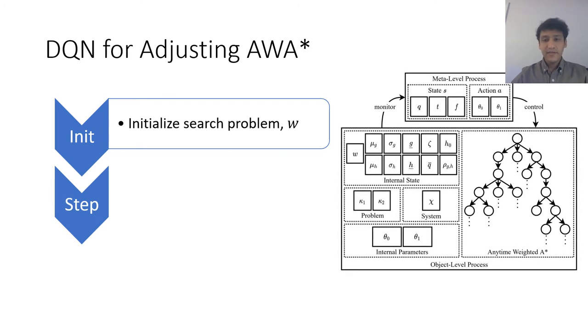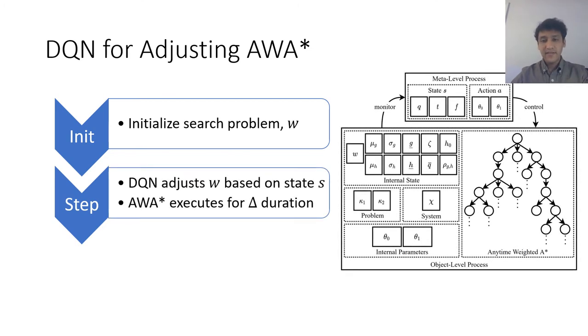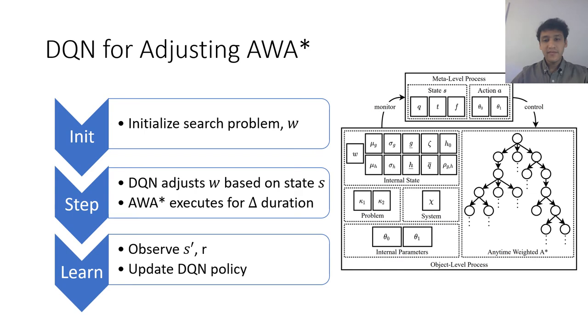Then based on the state features we just discussed and shown in the left half of this figure the DQN adjusts the weight. Then the Anytime weighted A star algorithm executes for delta duration. Then based on the feedback that is based on the next state and the reward it gets the DQN agent updates its policy. This step and learn loop continues until either the optimal solution is found or the deadline is reached.